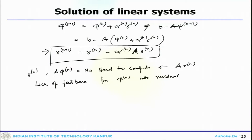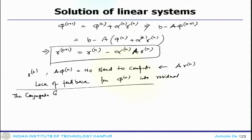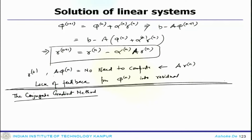This may cause the solution to converge to something very different from the exact one due to accumulation of some sort of rounded error. This is one of the deficiencies of this particular approach, which can be overcome with a modified or better version. The other class of system is the conjugate gradient method, whereas the previous one we have discussed is the steepest descent method.